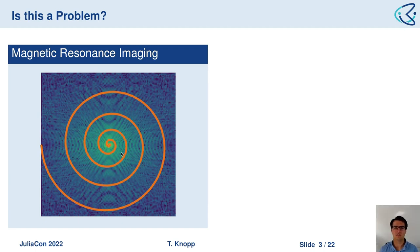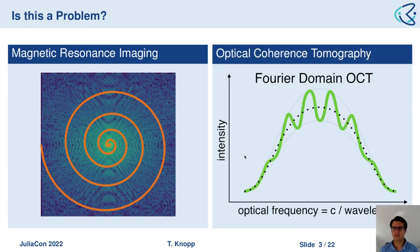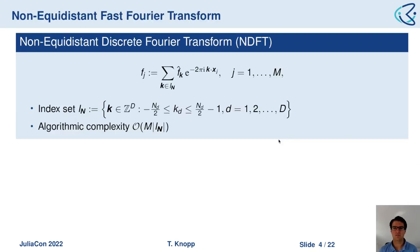In MRI we often sample along spiral trajectories in k-space, and in these cases we require a DFT on non-equidistant sampling nodes. Another example is OCT, where we have sampling in the frequency domain at equidistant wavelengths, but since optical frequency is one over wavelength, we again have non-equidistant sampling nodes.